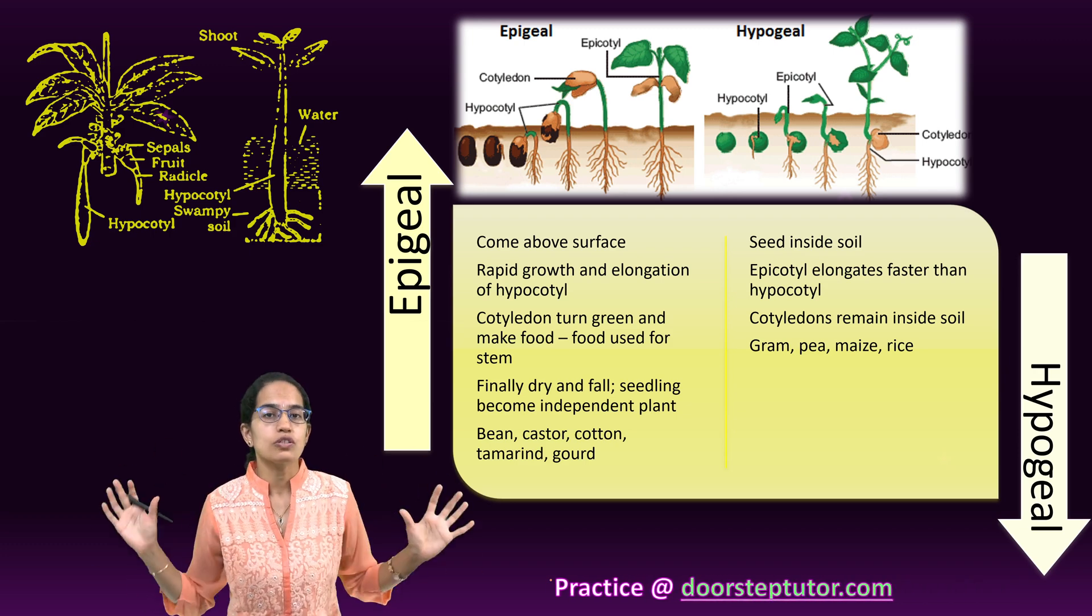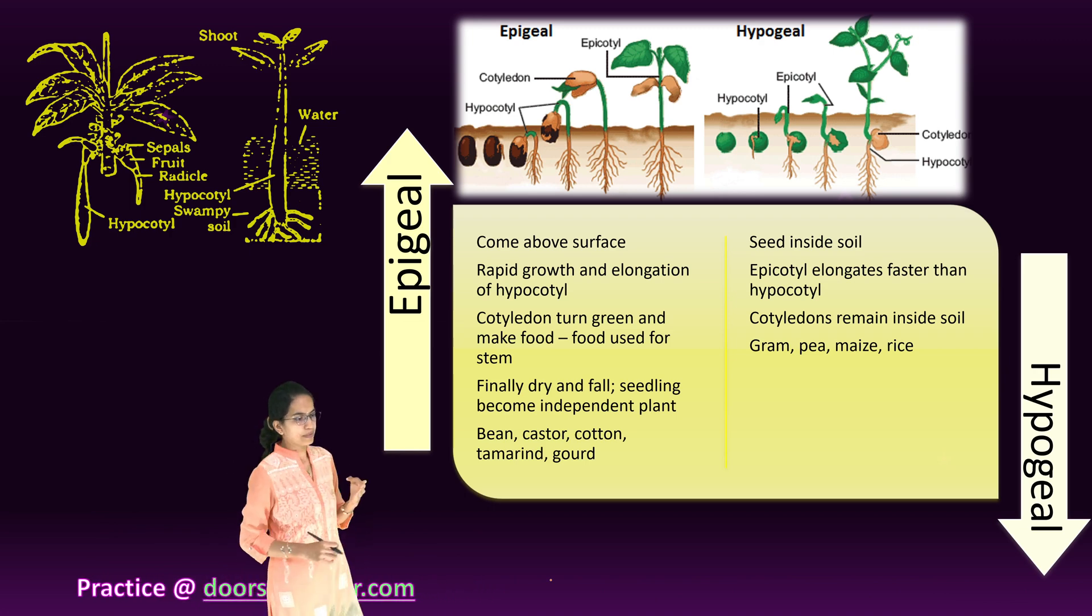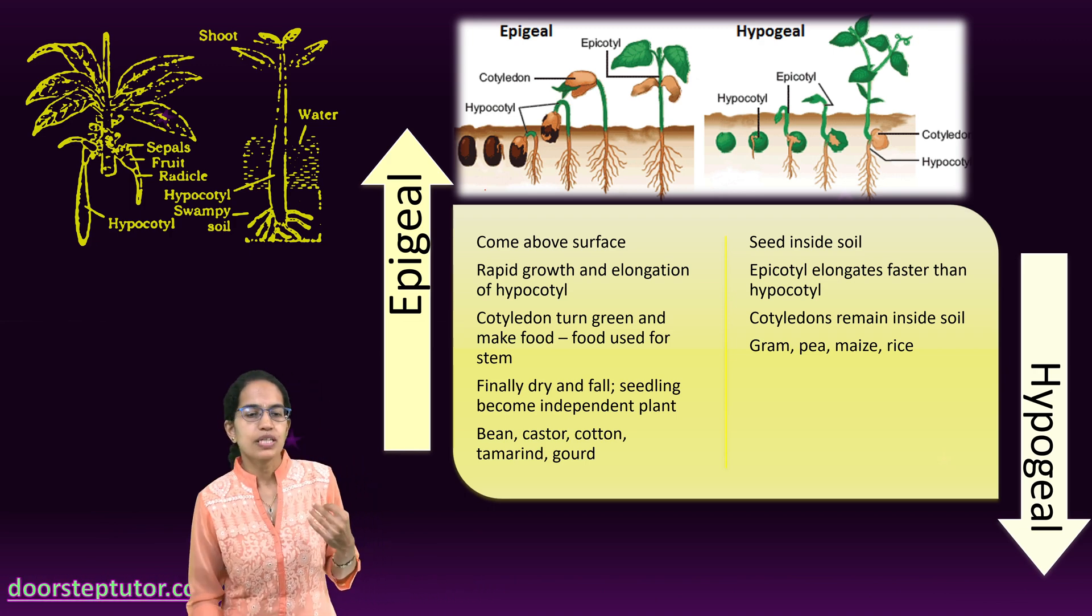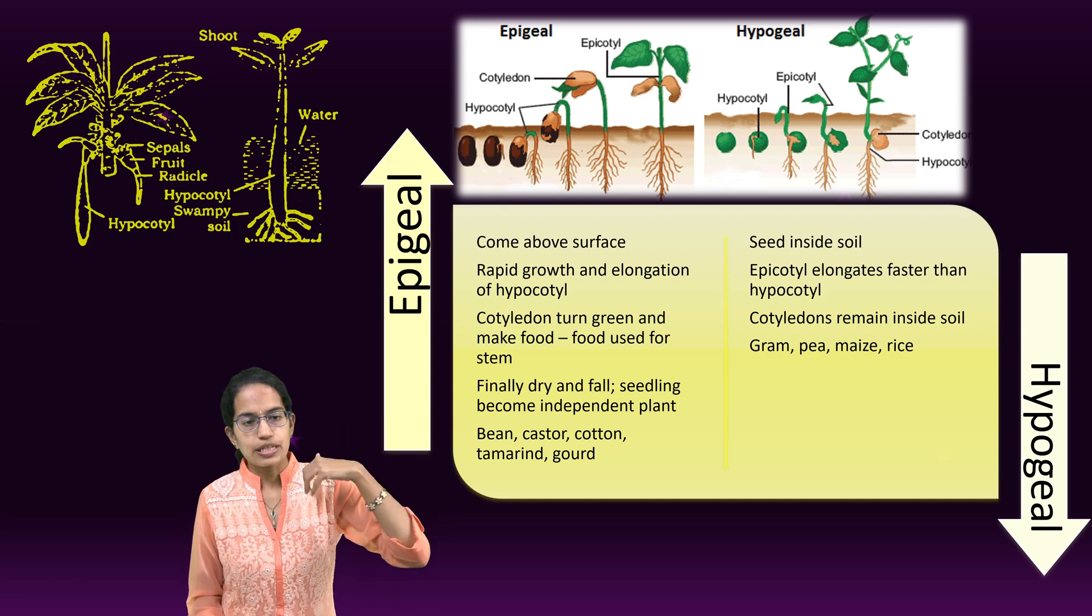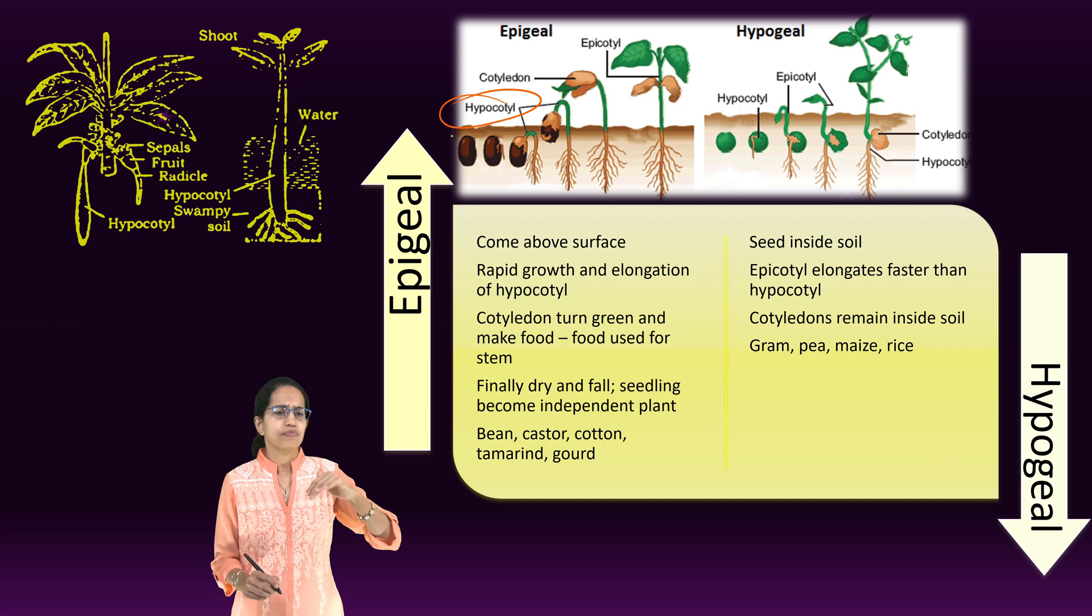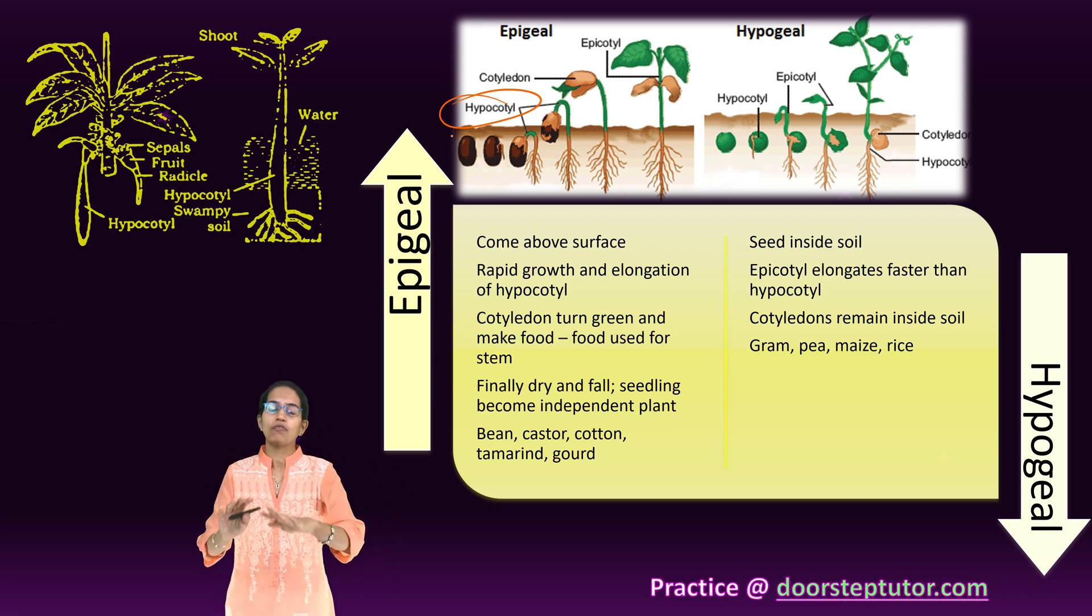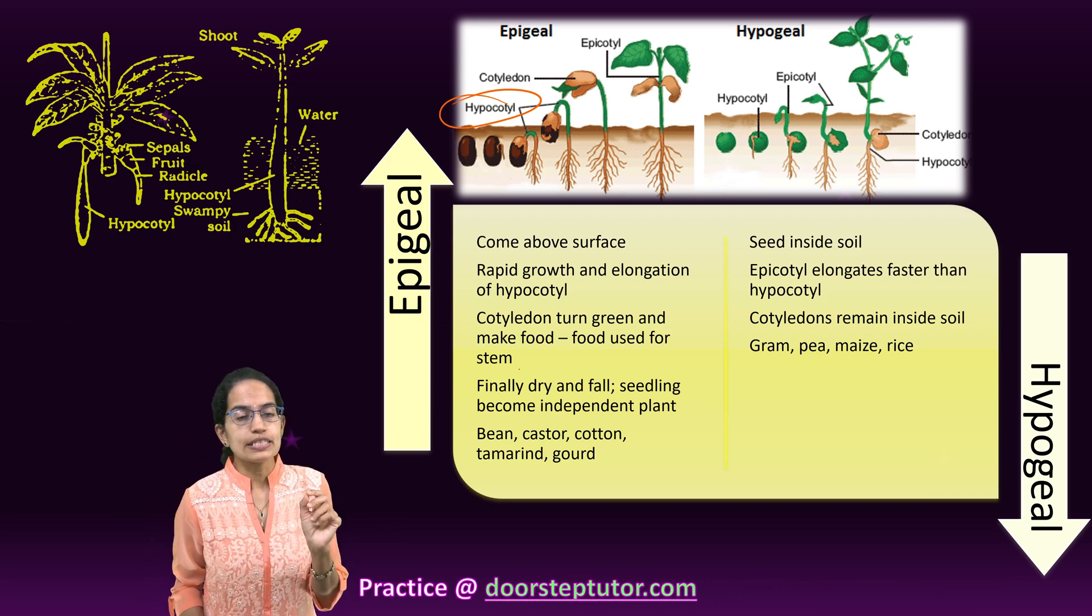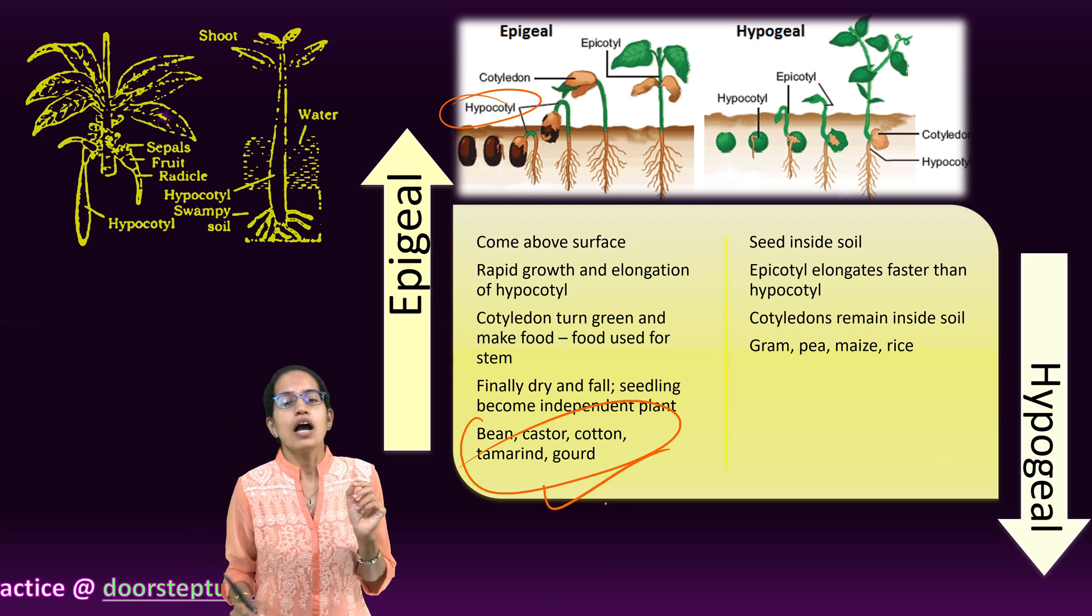The next is, how does the process of germination occur? Germination occurs either as epigeal germination or hypogeal germination. Epigeal germination occurs when the seed actually comes above the surface or the hypocotyl comes above the surface and then cotyledons form the first green leaves and after that the normal leaves of the plant would appear. Epigeal germination is seen in beans, castor, cotton, tamarind and gourd.